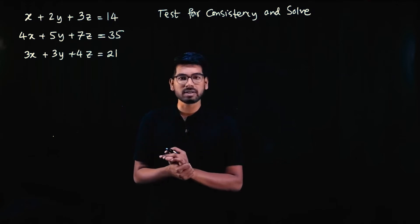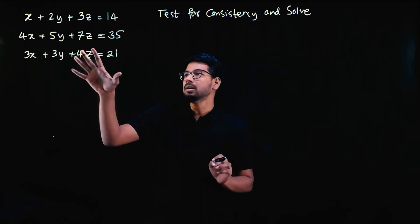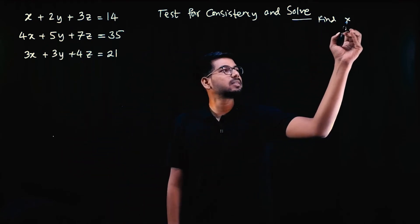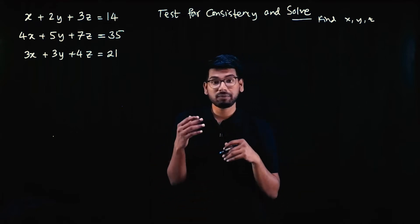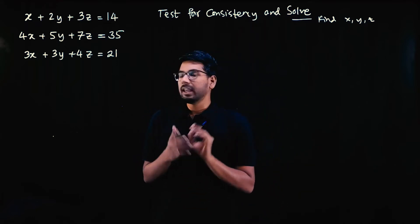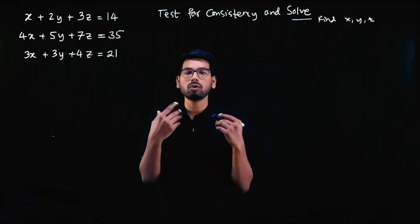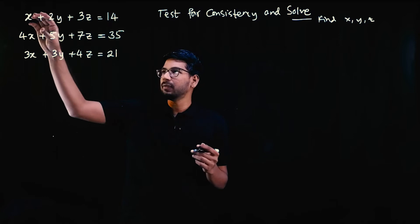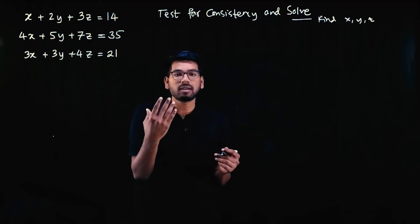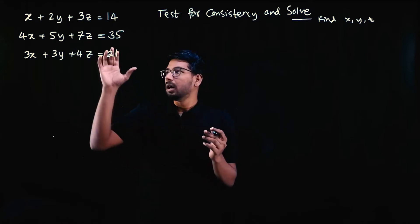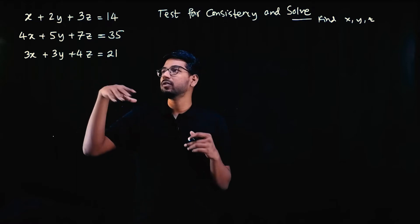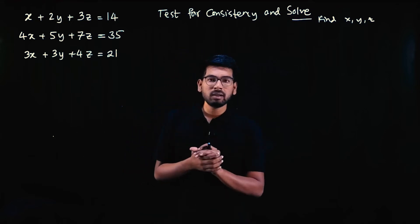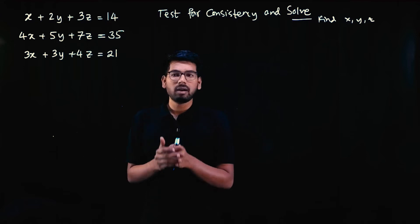Test for consistency and solve means finding the x, y, z values. But what is consistency? If a given system of equations has one solution, no solution, or many solutions. For example, if x, y, z values like 1, 2, 3 satisfy this equation but don't satisfy another equation, it's inconsistent. Consistency means there should be a set of x, y, z values that satisfies all equations. How do you check that? Since we're learning linear algebra, it must include matrices.